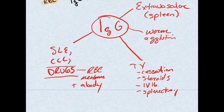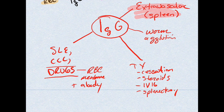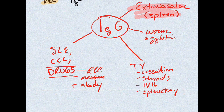With IgG, the red blood cell has IgG attached, which activates macrophages in the spleen. The spleen recognizes the IgG on the red blood cell and begins to eat away at it — this is called extravascular hemolysis, although some intravascular hemolysis may also occur with IgG. Importantly, IgG binds RBCs at regular warm body temperature, which is called warm agglutination, in contrast to IgM which is cold agglutination.